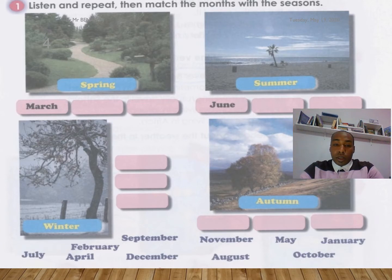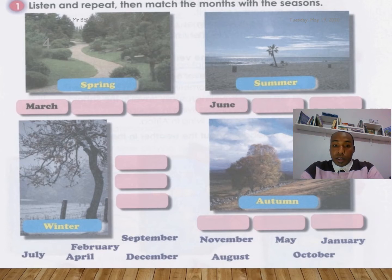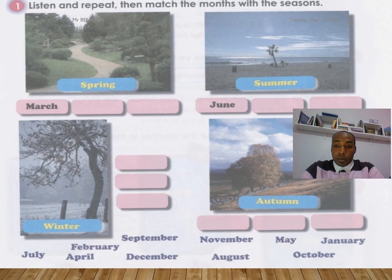Let's try to match the seasons with the months. Listen and repeat, then match the months with the seasons. You have spring, summer, March, June, winter, autumn, September, November, May, January, February, July, April, December, August, and October. You can take two minutes to put the months in the right column.